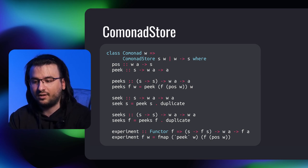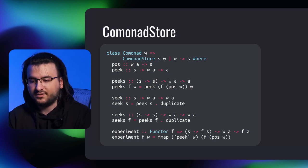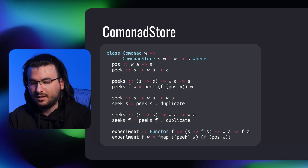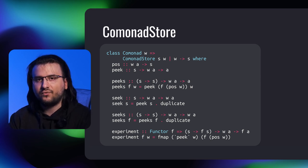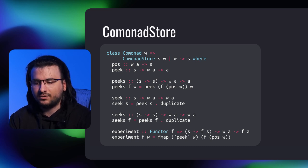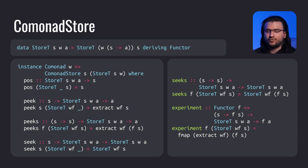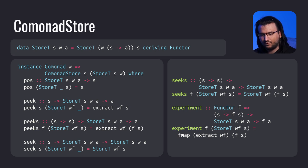Lastly, ComonadStore is the type class of all comonads that support both information about the current stored value via pos, and the ability to retrieve the focus by applying the accessor to a different stored value via peek. In a sense it's a combination of ComonadEnv and ComonadTraced. Pos and peek constitute the minimal complete definition and the rest can be defined in terms of them. Peeks applies the function to the current stored value and passes it to peek. Seek sets the new stored value and seeks modifies the current one. Experiment applies the functor-valued function to the stored value and fmaps the possibly altered stored value wrapped in the functor context with peek. The base instance is ComonadStore of the store transformer — since it's the composition of traced and env, the difference between regular store and its transformer counterpart is that the accessor function is wrapped in the context.